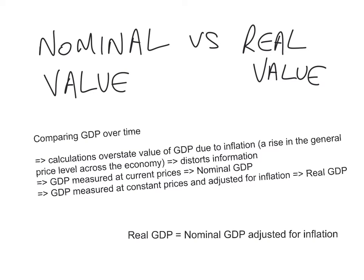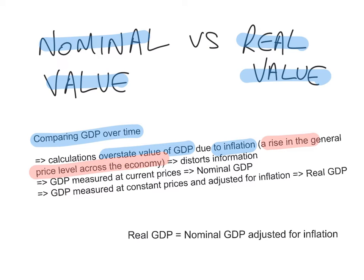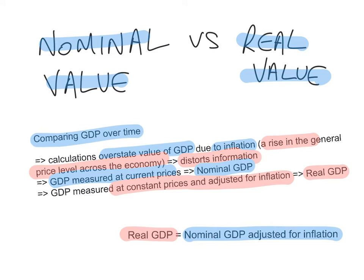When talking about measuring national output or national income, we also have to distinguish between nominal values and real values. This is very useful when you compare GDP over time. Calculations can sometimes overstate the value of GDP due to inflation. Inflation is a rise in the general price level across the economy. When prices rise generally, and we calculate GDP using current prices, this might distort information and give the impression that GDP has risen when really all that happened is that prices have risen. GDP measured at current prices is called nominal GDP. When you measure GDP at constant prices and adjust it for inflation, you have real GDP — which is nominal GDP adjusted for inflation — to remove the effect of inflation in overstating GDP.